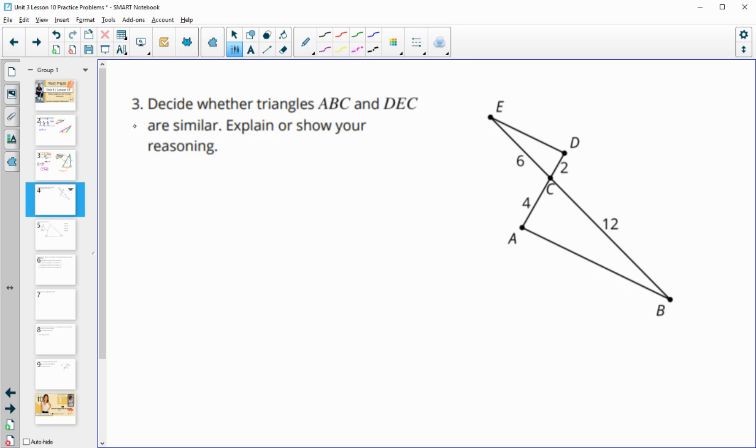Number three, decide whether the triangles are similar, and then explain your reasoning. So let's take a look. We know we've got vertical angles here. So this gives us one angle being congruent.